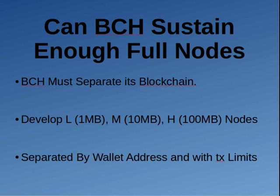In order for Bitcoin Cash to give users the full security benefits of running full nodes — the reason you want to run a full node is to validate your own transactions and see them broadcasted over the network, so there's no trust involved — you can also run a partial node without any trust if you separate the partial nodes by wallet address and then put transaction limits on top of them.